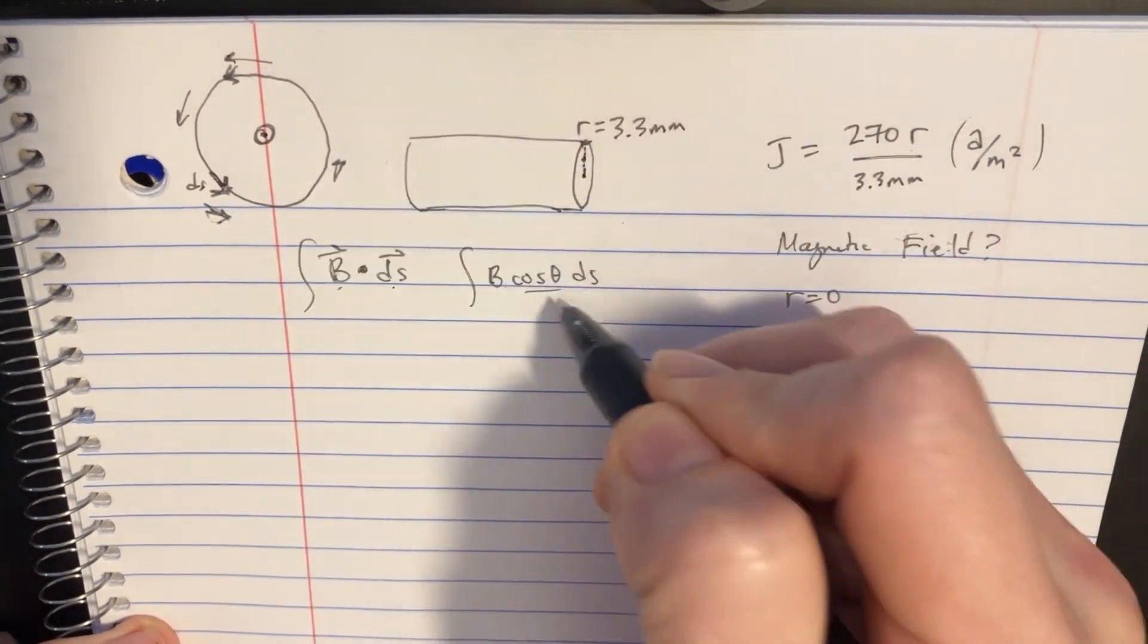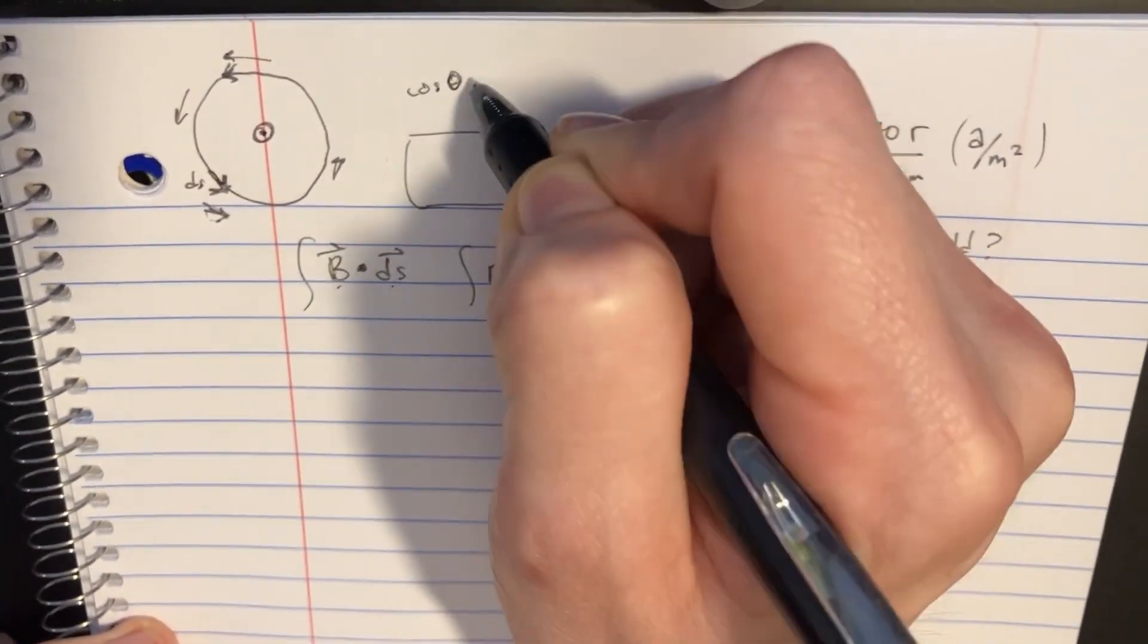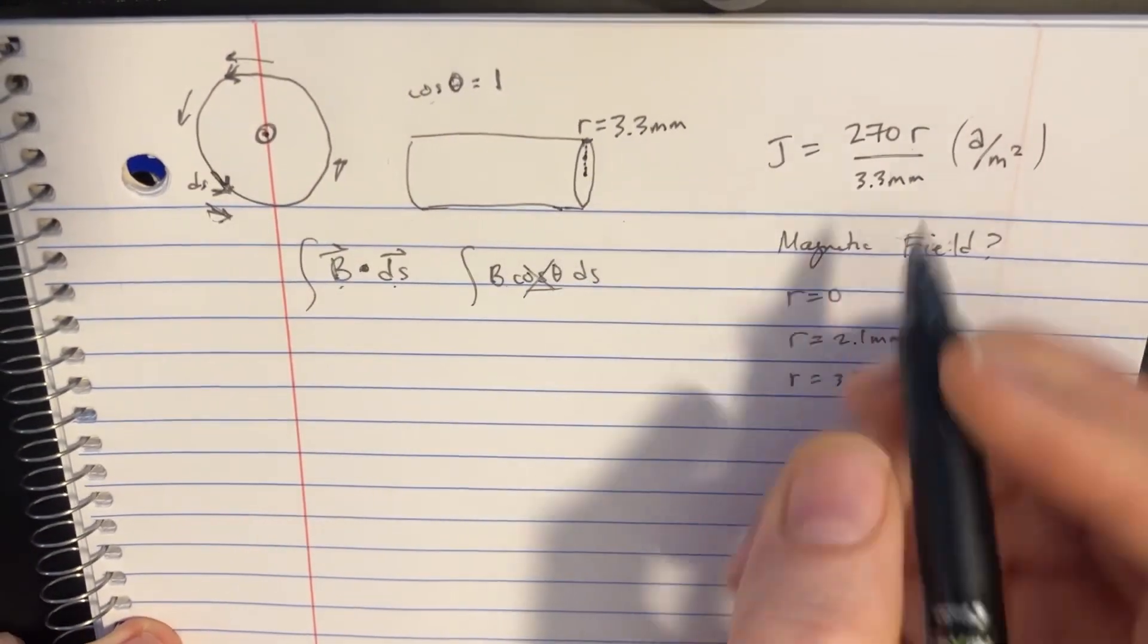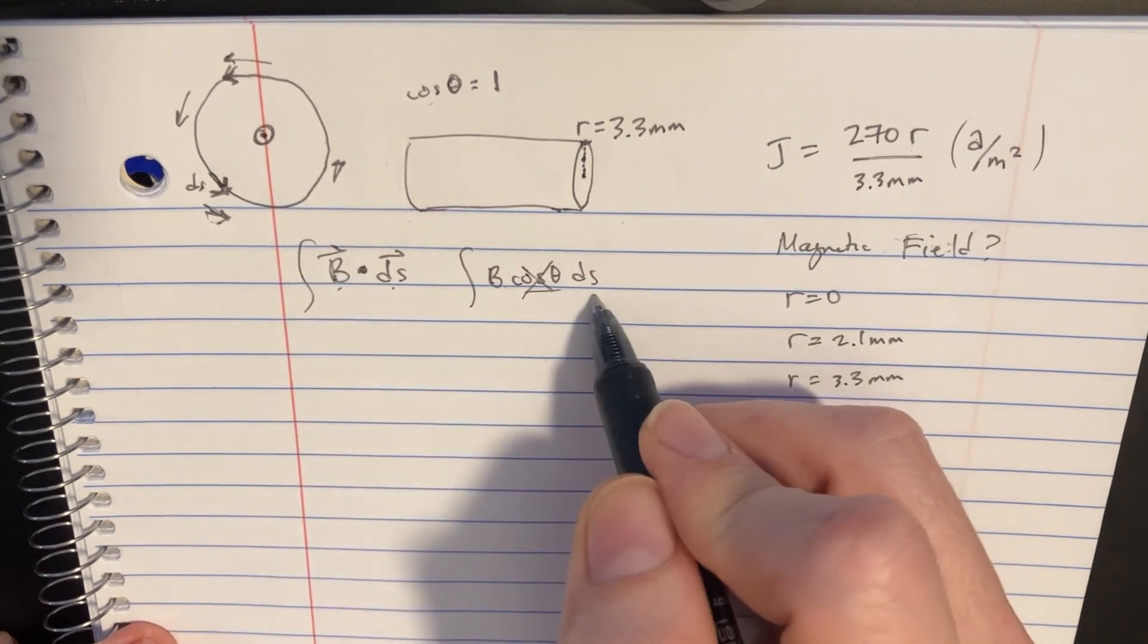And so you can see how the cosine would be zero degrees, cosine of zero, giving us one. So we can just kind of get rid of this cosine, which is nice because it's a circle, so that'll work out nicely.